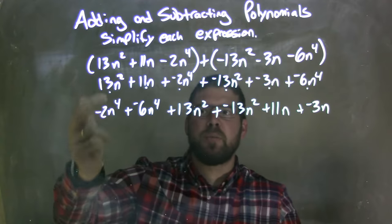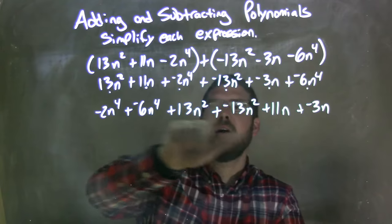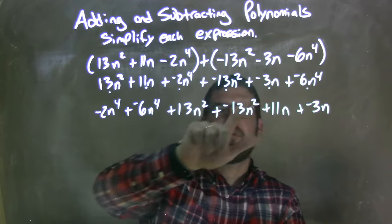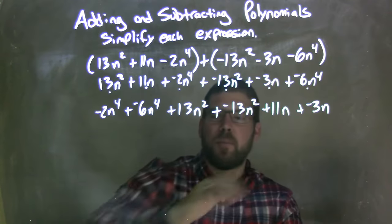Let's double check. Let's make sure we brought everything down. 13n squared is right there. 11n is right there. Negative 2n to the fourth is right there. Negative 13n squared is right there. Negative 3n is right there. And negative 6n to the fourth is right there. And I've brought them all down. Fantastic.